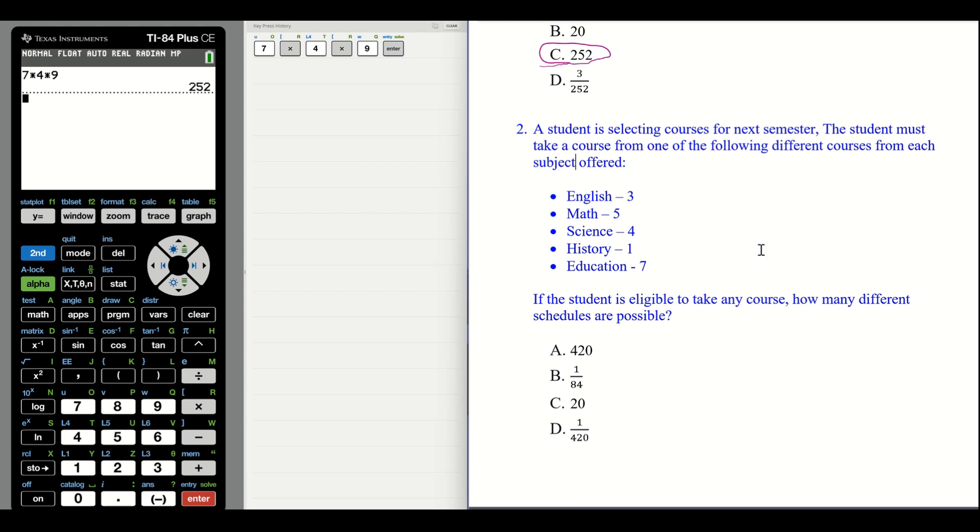If the student is eligible to take any course, how many different schedules are possible? Again, they are not asking you for probability. They're asking you for possible outcomes. So all you need to do is multiply all of these together. Five times three times four times one. That is A, 420 possible outcomes.